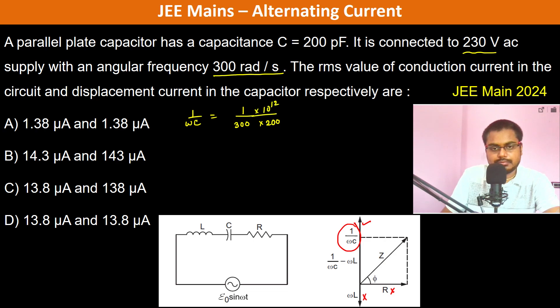So this becomes 10^8/6. This is Z equals 10^8 divided by 6.